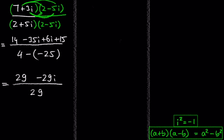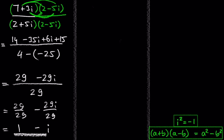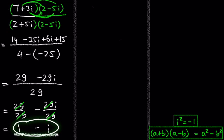So we get 29 minus 29i over 29. The fraction rule says we can split this up to 29 over 29 minus 29i over 29. 29 over 29 is 1, and 29i over 29 is i. After cancelling out the 29s, we get 1 minus i. So 7 plus 3i divided by 2 plus 5i is 1 minus i — and we did our first division with complex numbers! Notice that we expressed the solution in standard form.